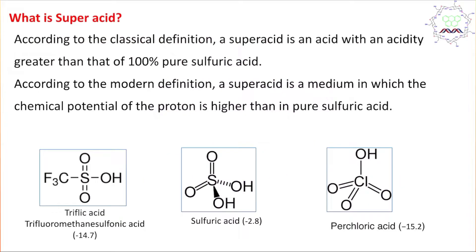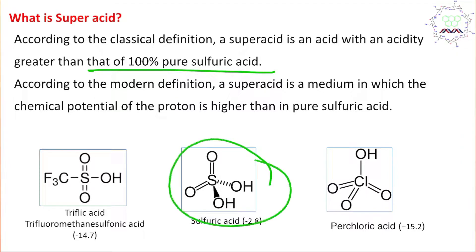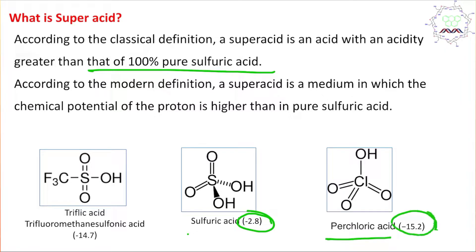What is a super acid? By definition, a super acid is stronger than 100% pure sulfuric acid. More accurately, the tendency of proton release is more compared to concentrated sulfuric acid, or the conjugate base of the super acid is more stable compared to the conjugate base of sulfuric acid. Sulfuric acid's pKa is −2.8, and perchloric acid's pKa is −15.2. Lower pKa indicates greater acidity.